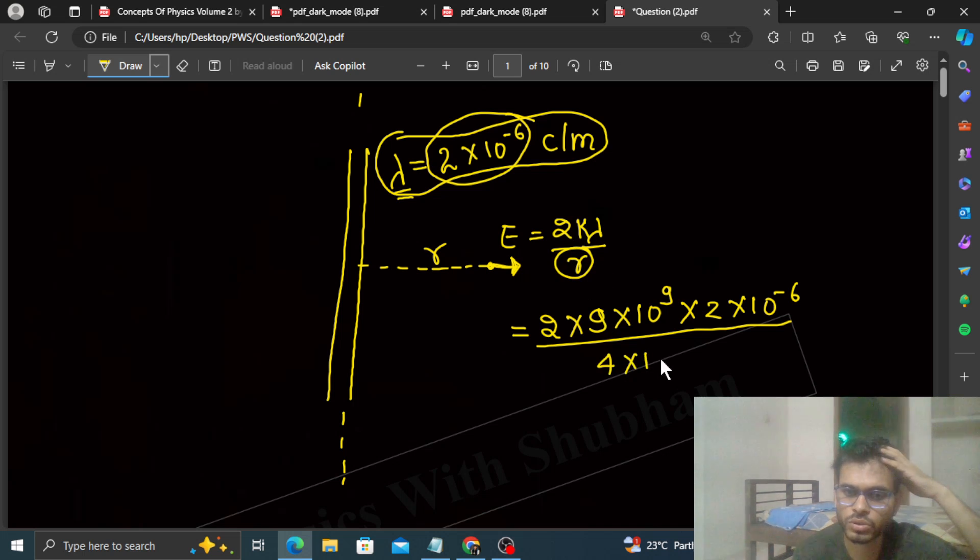2 times 2 is 4, and this 4 cancels with 4. So 9 × 10^9 × 10^-6 gives 10^3, with 10^-2 in the denominator, which adds to give 10^5.